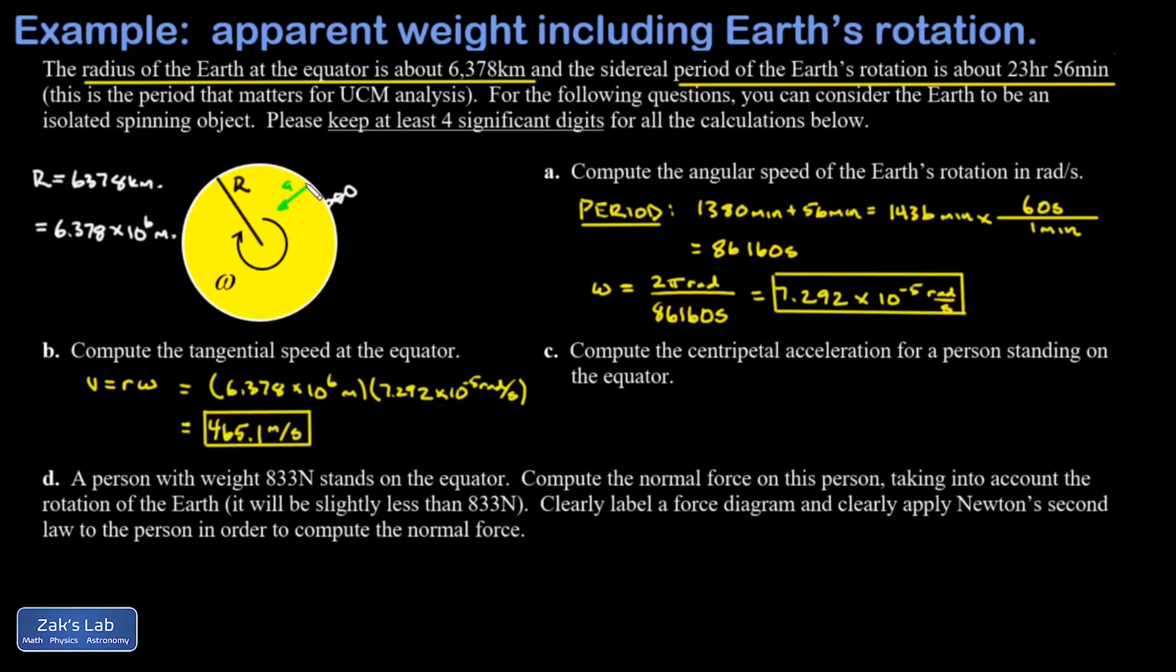The first formula we learned for this is v^2/r, but it can also be written as rω^2. That's what I'm going to choose in this case. My radius is 6.378 × 10^6 meters, and my angular speed is 7.292 × 10^-5 radians per second.